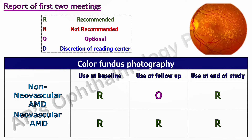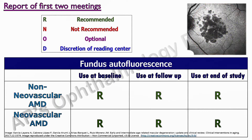Non-stereoscopic color fundus photography is recommended at the beginning and end of all studies. It is also the modality of choice for detection of various findings such as hemorrhages and focal pigmentary changes. Confocal fundus autofluorescence imaging is recommended for both interventional and non-interventional trials in all types of AMD to monitor for the development and progress of atrophy.